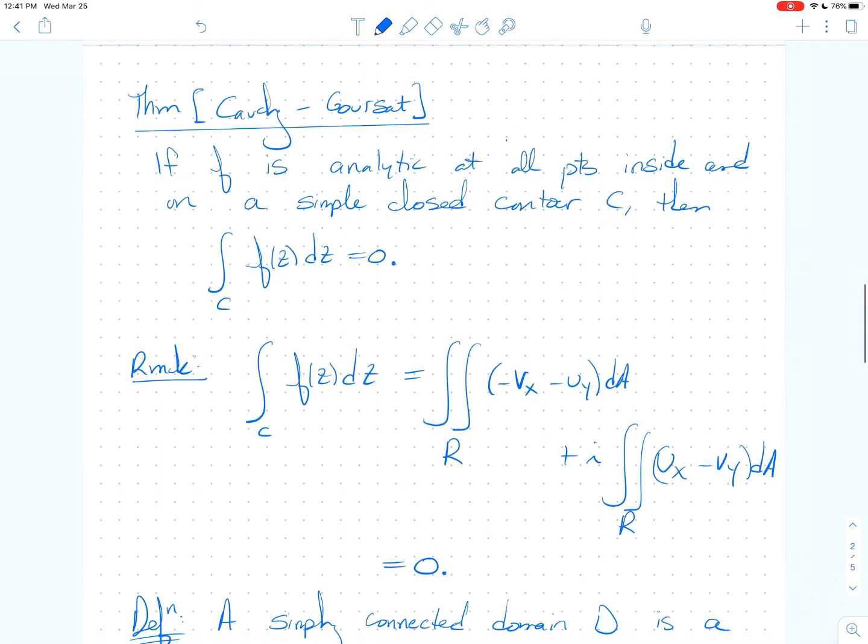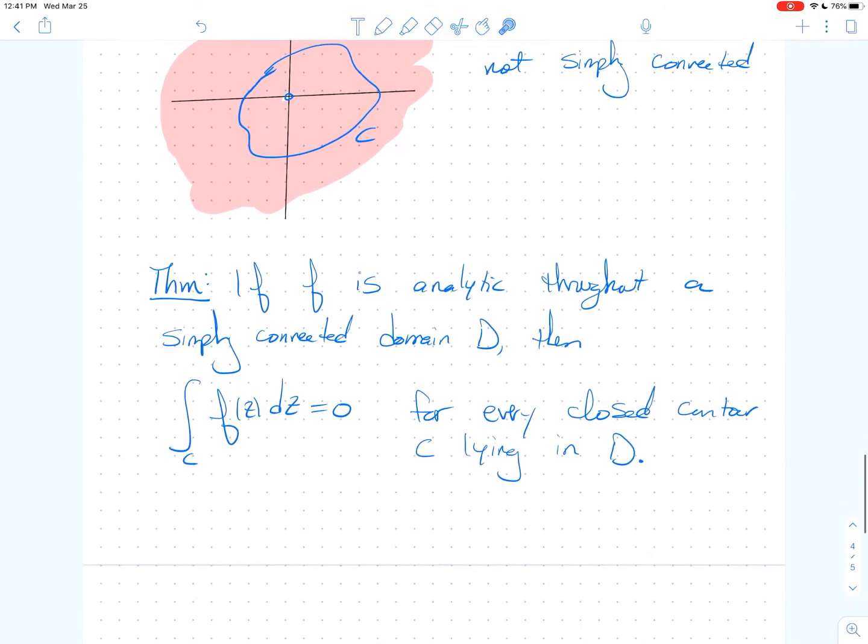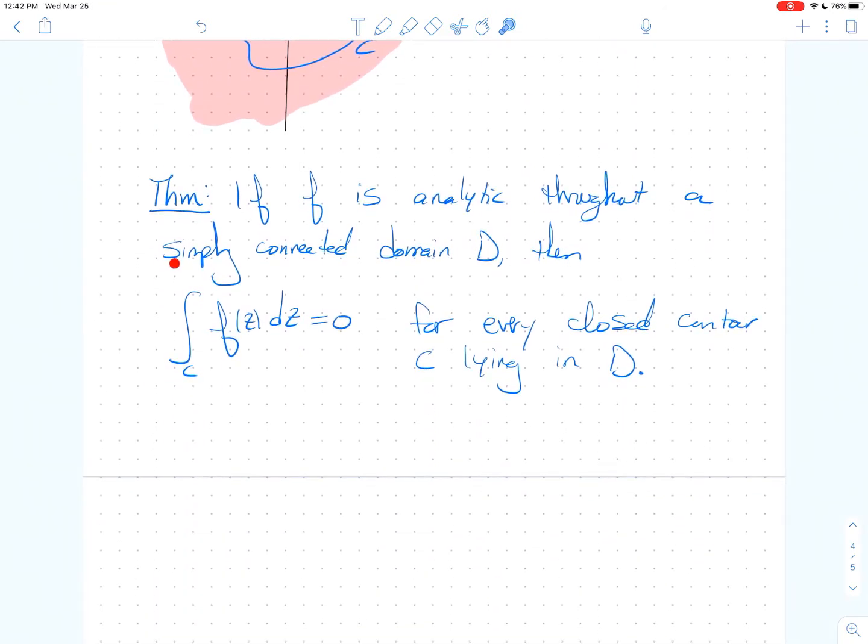Let's scroll up and actually compare this to our previous result. So if I scroll up, our previous theorem, the Cauchy-Gorsat theorem, said that if F is analytic at all points inside and on a simple closed contour C, then the contour integral is 0. And so the point is we're working over a simple closed contour C. Okay, when you scroll down to this next theorem, it says, hey, as long as you're analytic throughout a simply connected domain, then the contour integral over a closed contour is 0, regardless of whether C is simple. See, my C here in this theorem doesn't need to be simple, as long as you're working in a simply connected domain. So let's actually point that out as a remark. Remark. So C need not be simple in the above theorem.